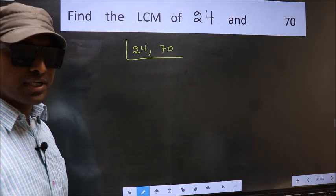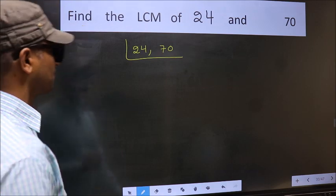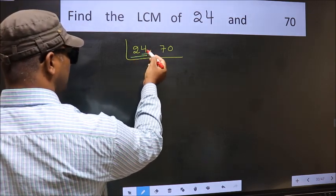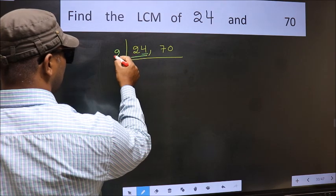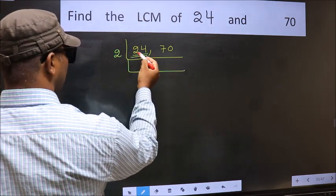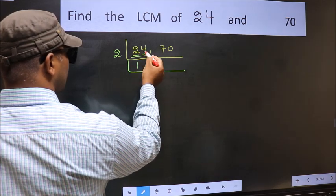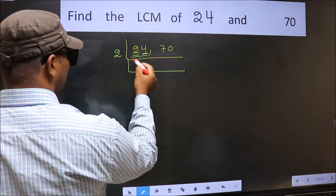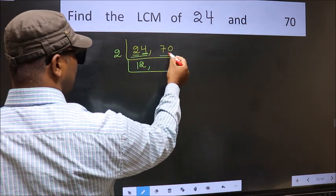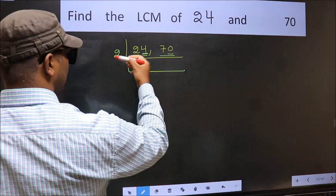Now focus on the first number, which is 24. Last digit is 4, so take 2. When do we get 2 in the 2 table? 2×1 is 2. The other number 4 — when do we get 4 in the 2 table? 2×2 is 4. The other number 70 has last digit 0, so it is also divisible by 2.